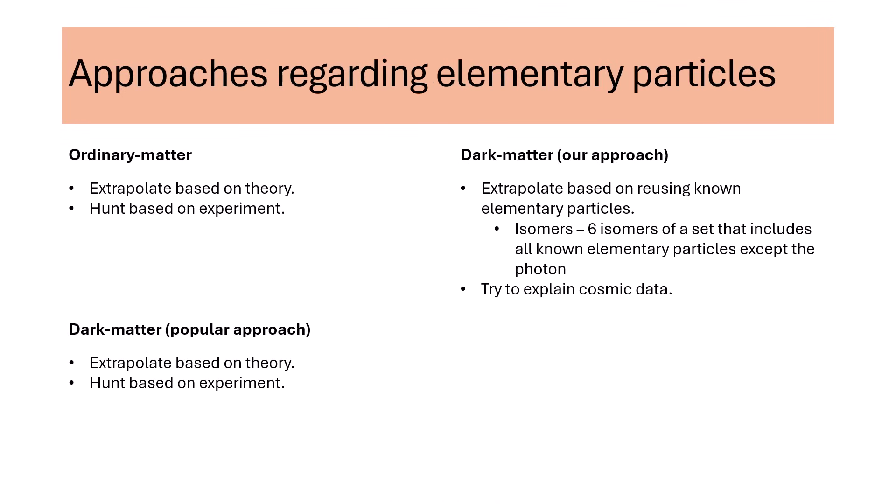Methods. We suggest that the possible existence of dark matter hydrogen-like atoms points to the notion that dark matter elementary particles exist and might be like known elementary particles. We suggest a notion of six isomers of a set of elementary particles. One isomer underlies ordinary matter stuff. Five isomers underlie dark matter stuff.